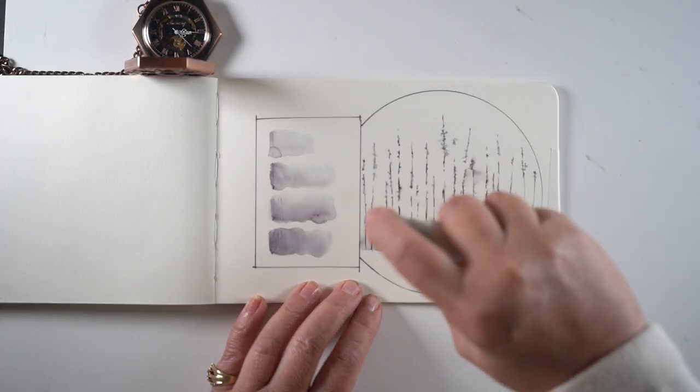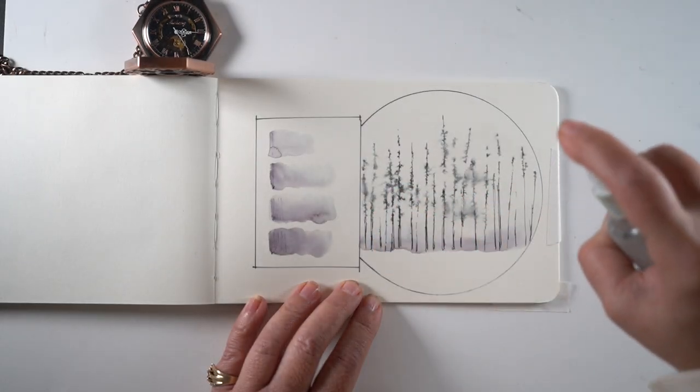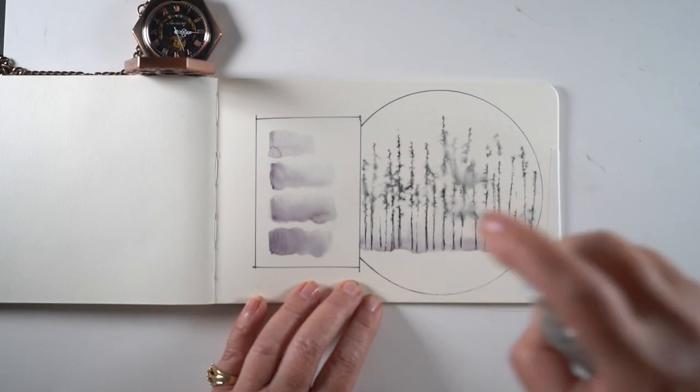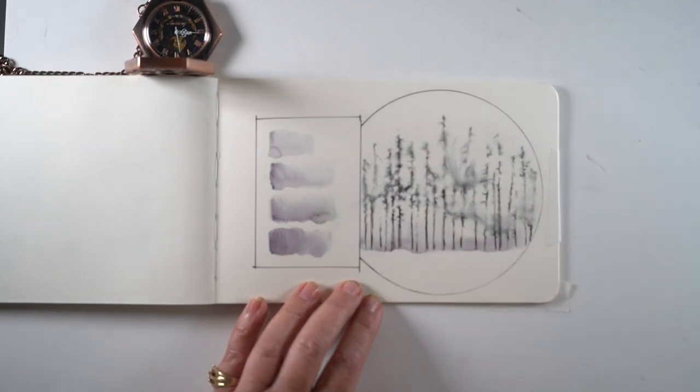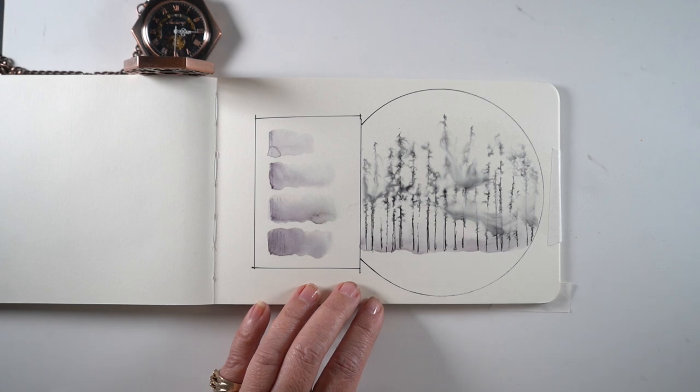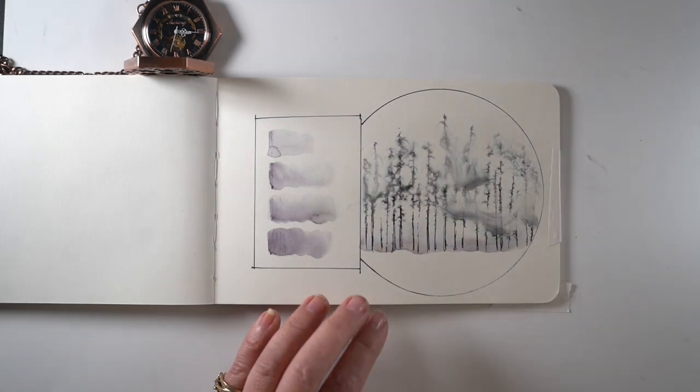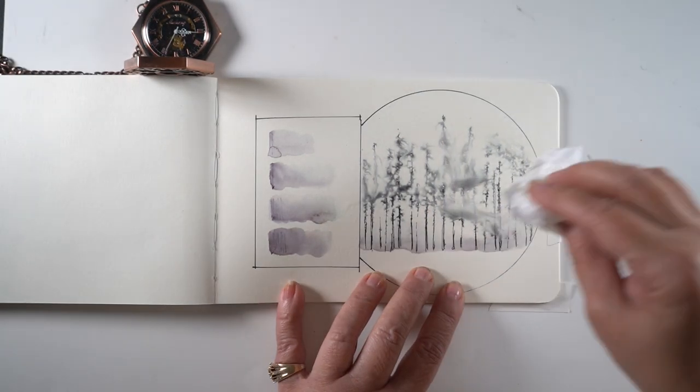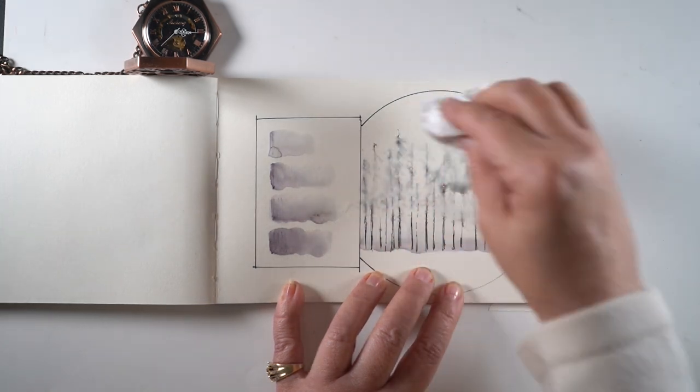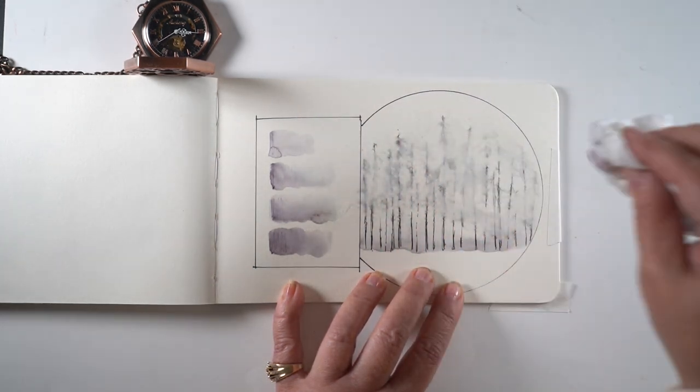And then you want to spritz them with water and you'll have to practice with how much water it is. Start lightly and just let the water start moving the ink. Don't get it super soaky because then you'll just wash all the ink out entirely. The longer you let it sit there, the more it could do a little moving around. So be aware of that.